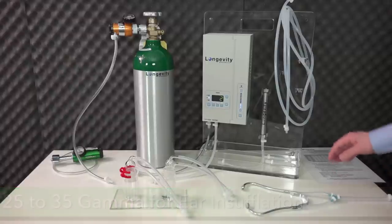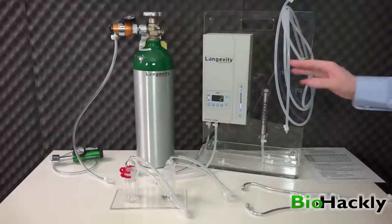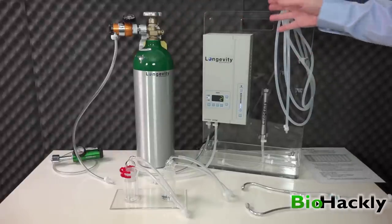Depending on what ozone generator and oxygen tank you have, your flow might be a little different, but you still want to get between 25 and 35 gamma for two to three minutes according to Dr. Schellenberger's protocol.